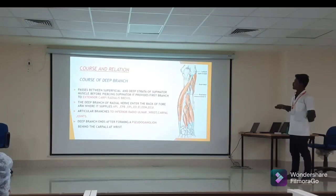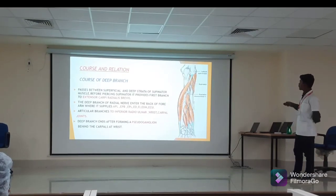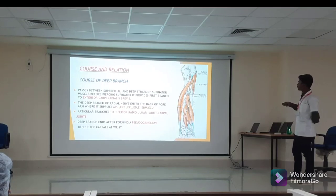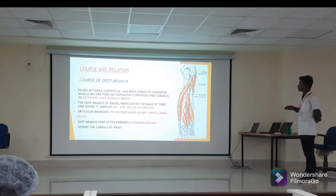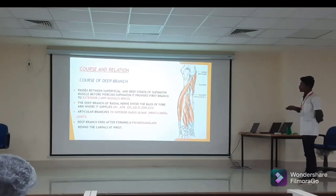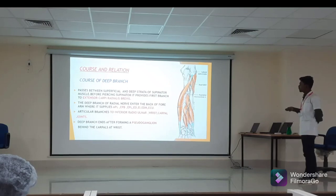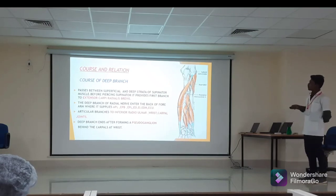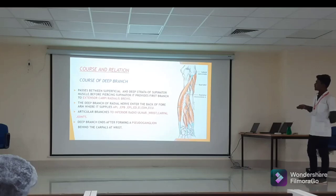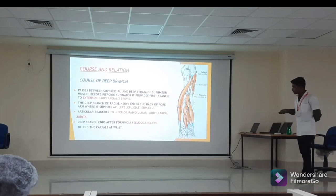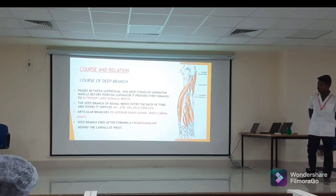The deep branch passes between the superficial and deep strata of supinator, giving off a first branch to extensor carpi radialis brevis before doing so. The deep branch then descends and enters the back of the forearm, supplying all the extensor muscles of the back of the forearm. It also gives articular branches supplying the inferior radioulnar joint, disc joint, and carpal joints. The deep branch ends after forming the posterior interosseous nerve behind the carpals at the wrist.